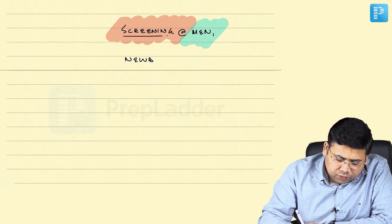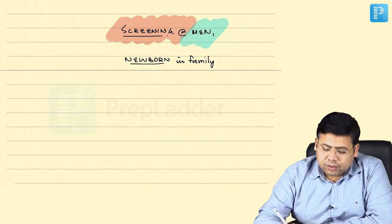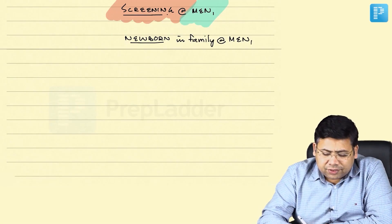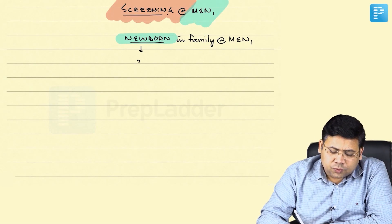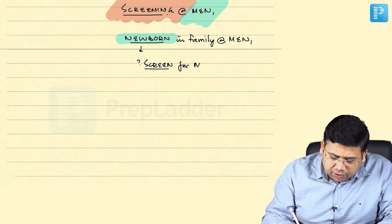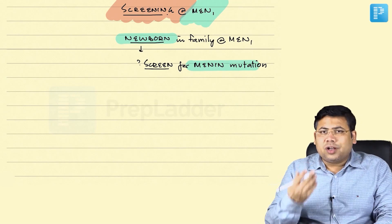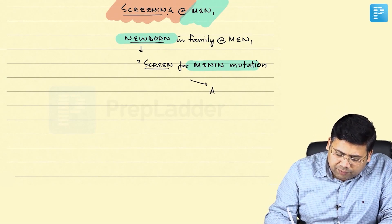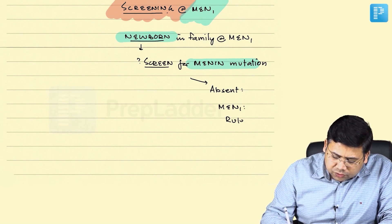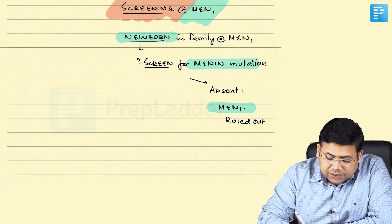Whenever you have a newborn in a family of MEN1, whether a first-degree or second-degree relative has MEN1, the first thing you screen for is the menin mutation. The menin mutation could either be present or absent. If the menin mutation is absent, no further action is needed along that path; if it is present, we move to the next step.